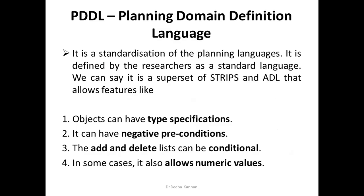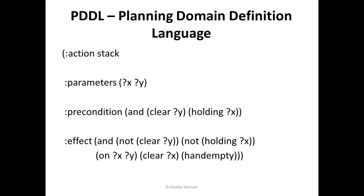The next language is PDDL — Planning Domain Definition Language — a standardized planning language described by researchers. It is superior to both STRIPS and ADL. PDDL includes many objects, each of which can have a type specification. It supports negative preconditioning, has an add-and-delete list based on certain constraints, and sometimes allows numerical values. It is a greatly enhanced version of STRIPS and ADL. One sample example for PDDL is the block world problem — where we arrange cubes on a table in a certain pattern. The action used here is a stack function.